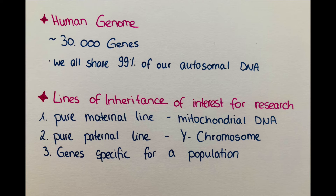The second line researchers are interested in is a man's pure paternal line. They observe the genes on the Y chromosome of a boy, then his father, then his father, and so on — because the Y chromosome is only inherited from the fathers. If you wonder why, you can click on the banner and see my sex chromosome video where I talk about that.